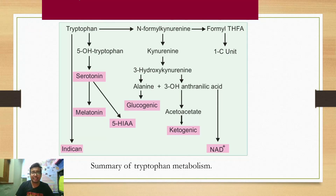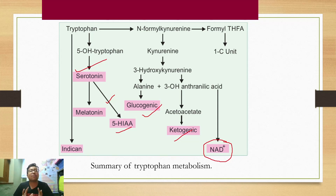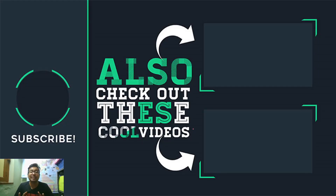This is the final slide with the overall metabolism of tryptophan. You just need to remember: serotonin is formed by hydroxylation and decarboxylation; serotonin is converted to melatonin by acetylation and methylation; one excretory product is 5-HIAA; one important vitamin product is niacin; and tryptophan is both glucogenic and ketogenic. The structure: tryptophan is an aromatic amino acid containing an indole ring. That is the minimum you need for revising tryptophan metabolism. Feel free to get back with your queries, and I hope to see you again with another video.